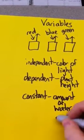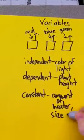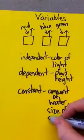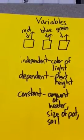A constant could also be the size of the pot that the plant is in. It could be the soil. You give them all the same kind of soil.